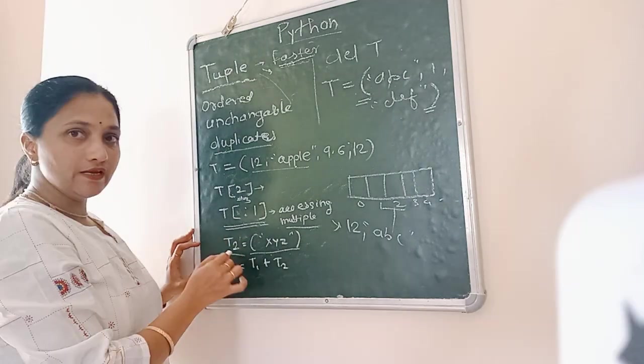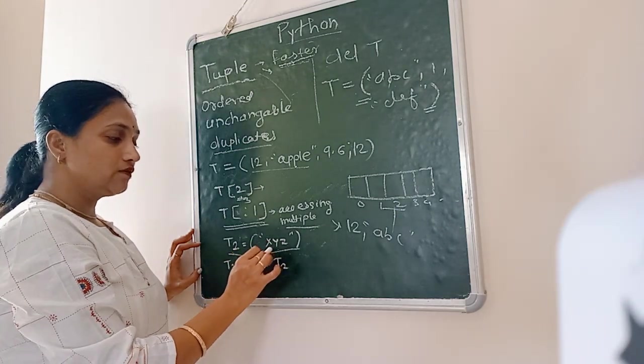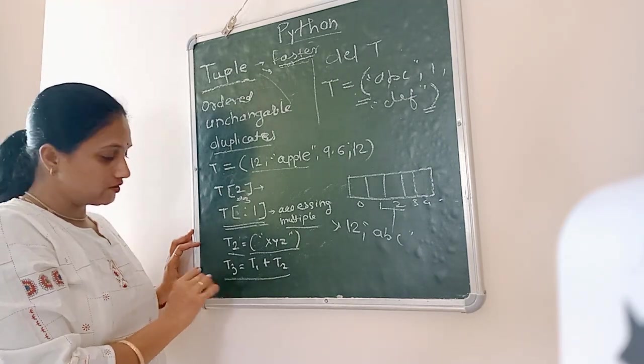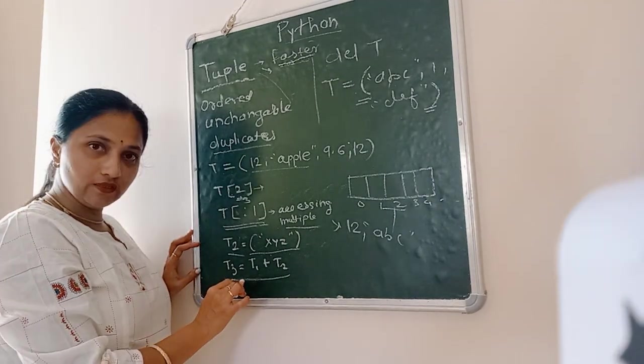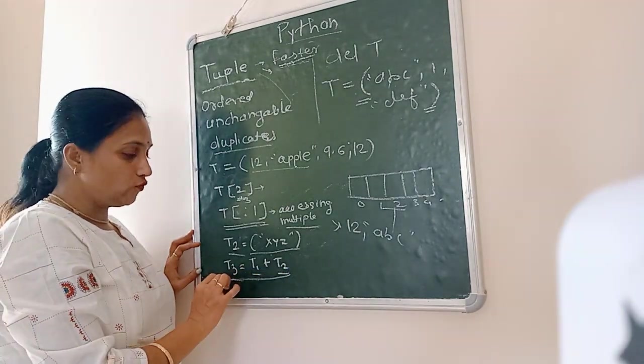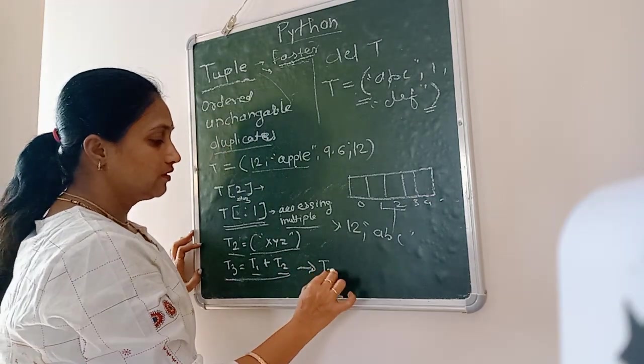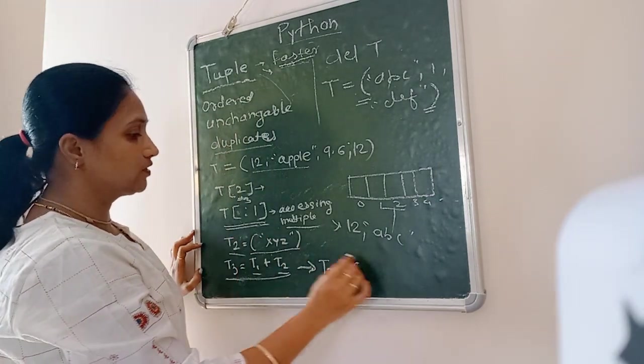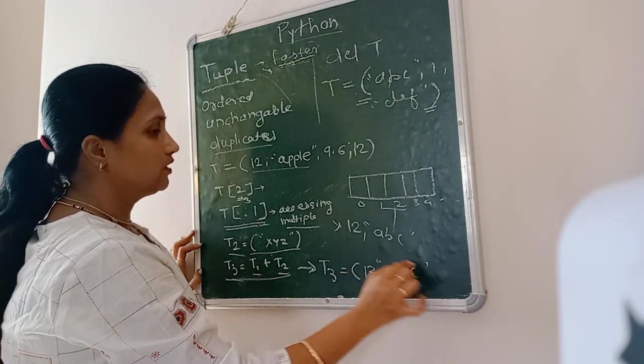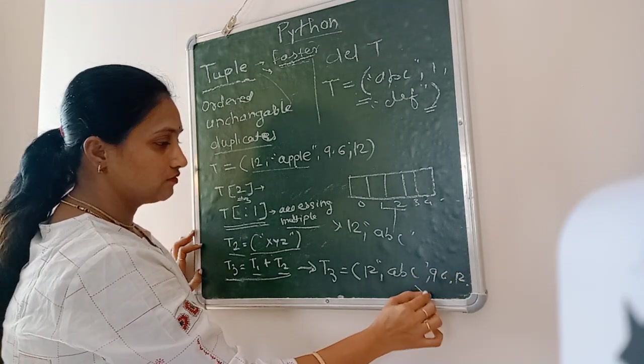We are taking here one more tuple naming t2 and assigning it value xyz. And this is the way to combine two tuples. We are taking one more tuple t3 and assigning value t1 plus t2. So now what will t3 be having? What are the contents of t3 now? 12, a, b, c, 9.6, 12, then xyz.